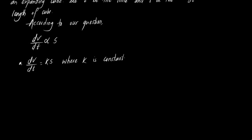Now we write the formulas. The volume of the cube is L cubed, so d(L³)/dt is equal to k times the surface area. The surface area of the cube is 6L squared, so d(L³)/dt = k times 6L².